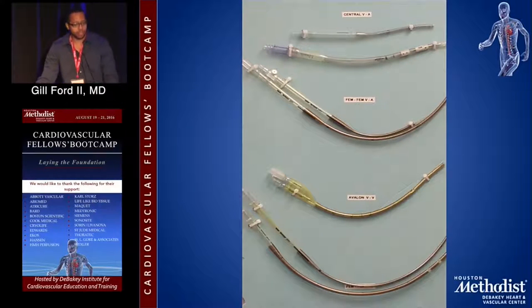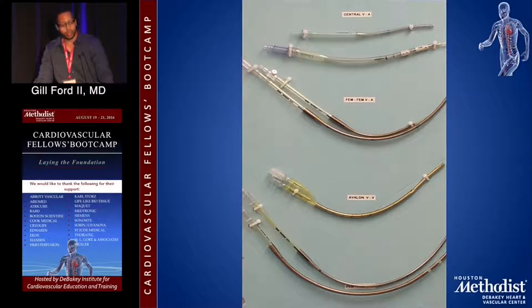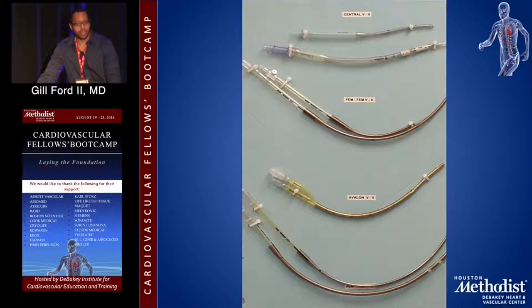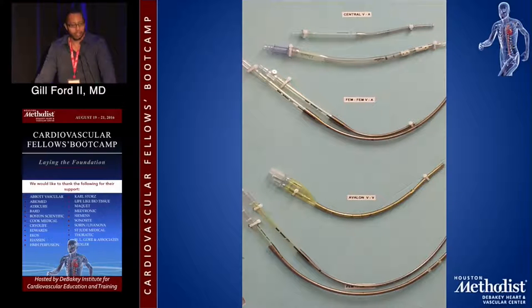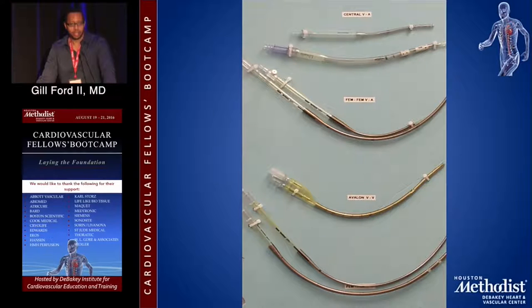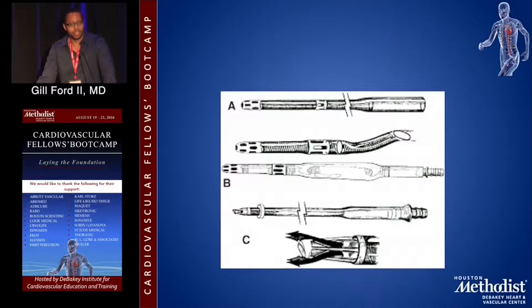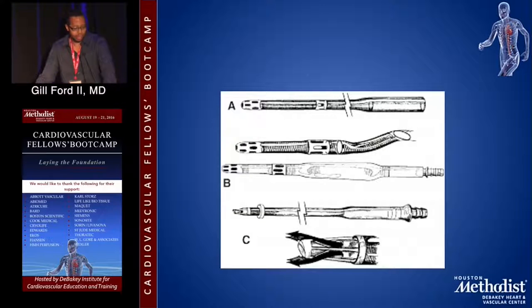Here are some pictures of cannulas that are commonly used. The top small one is an aortic cannula. The second one is a double or triple stage cannula, which would go in the IVC. The two longer cannulas are femoral cannulas — the shorter one on top is a femoral arterial, and the second is a femoral venous cannula. The surgical procedure dictates what cannulation would be used.